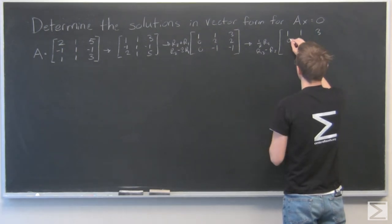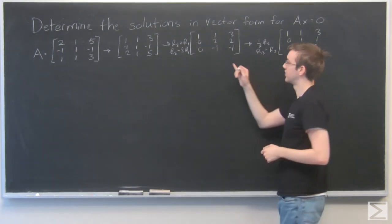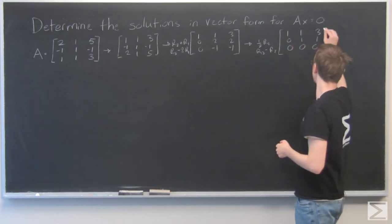So this is 1, 1, 3. This is 0, 1, 1. And again, I just subtracted a multiple of row 2 to get rid of row 3. So that's 0s now.